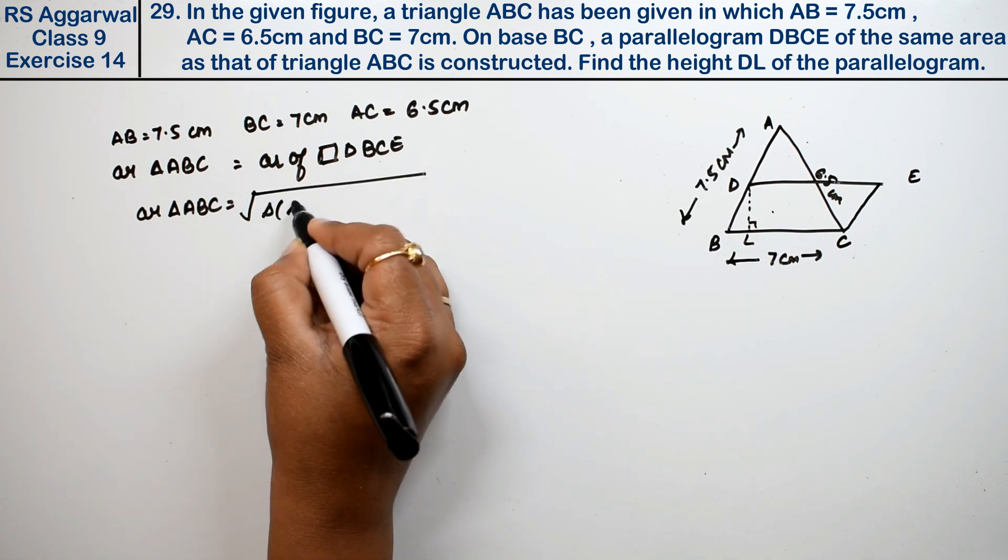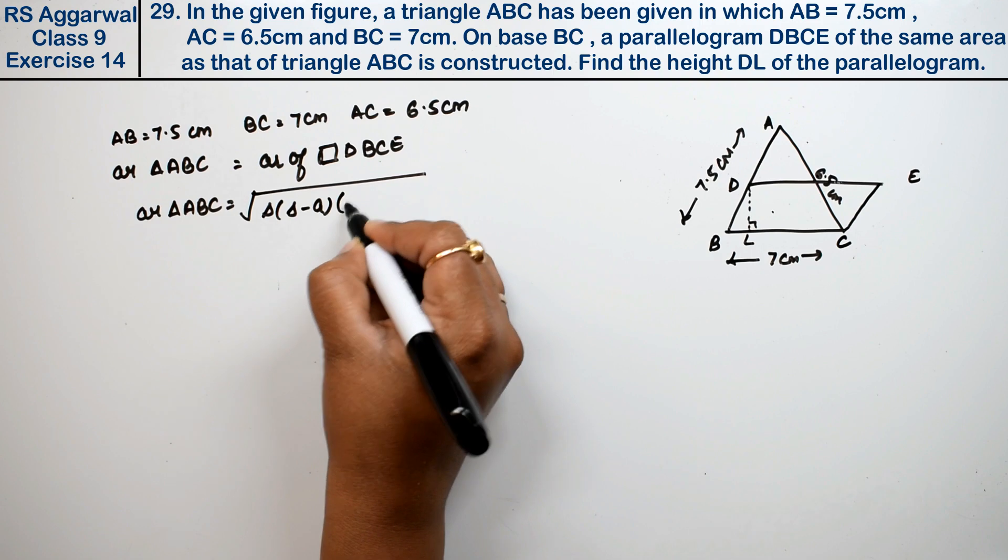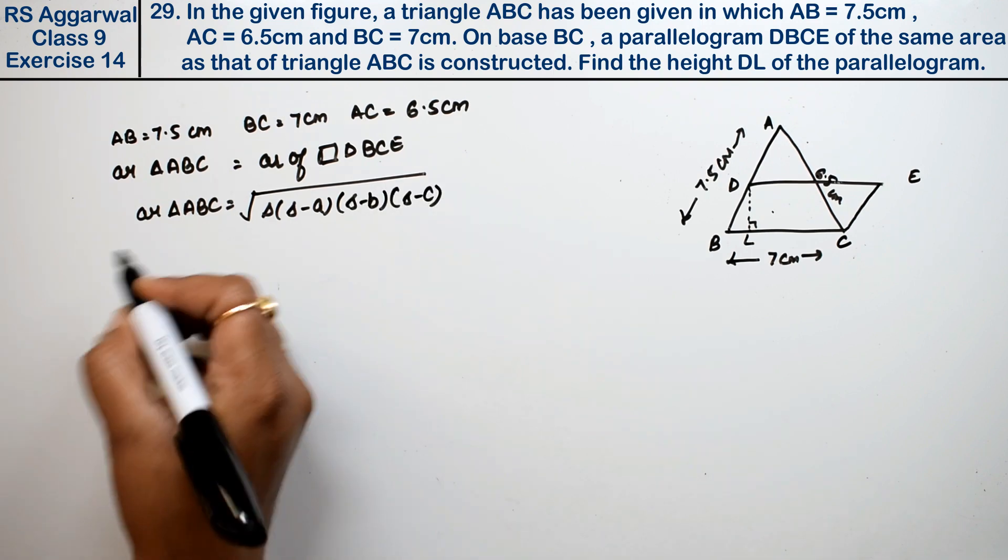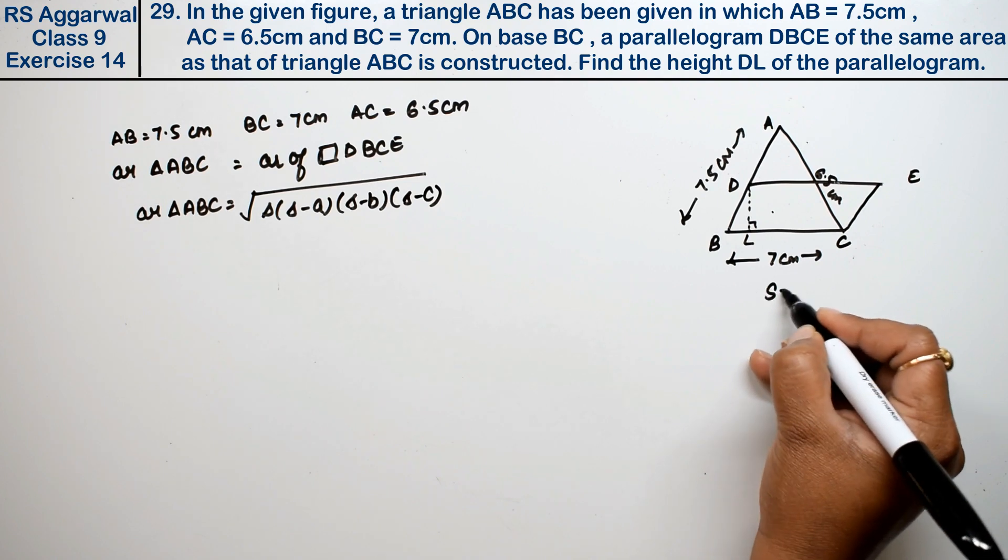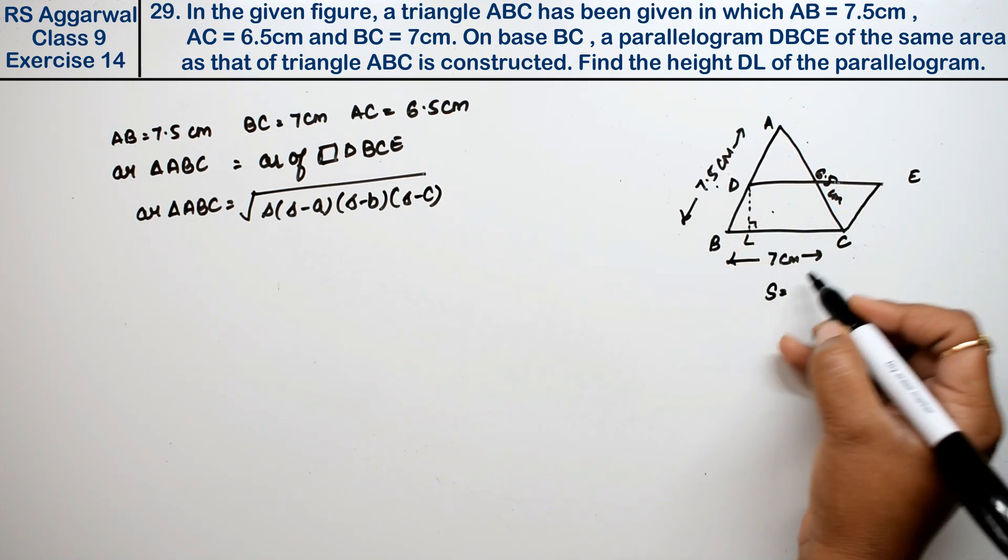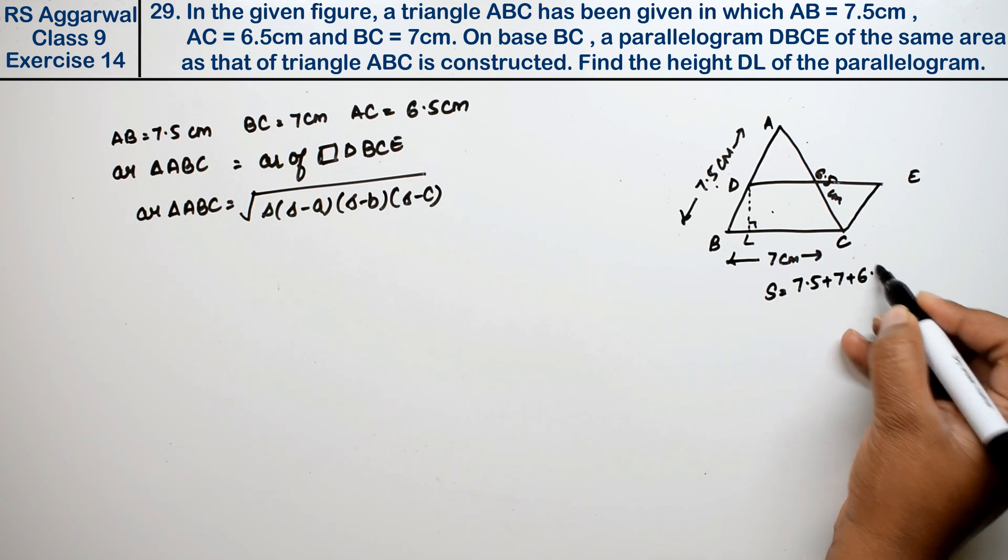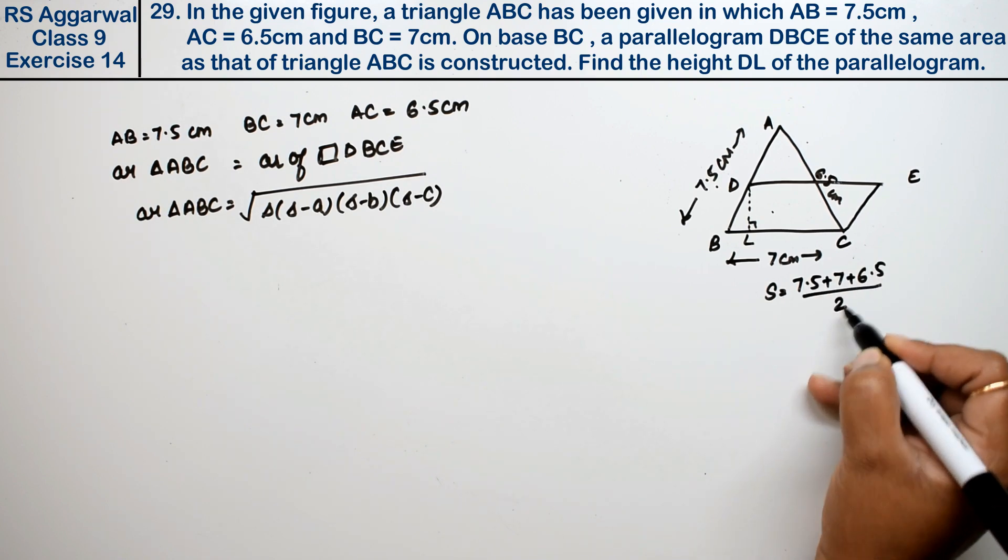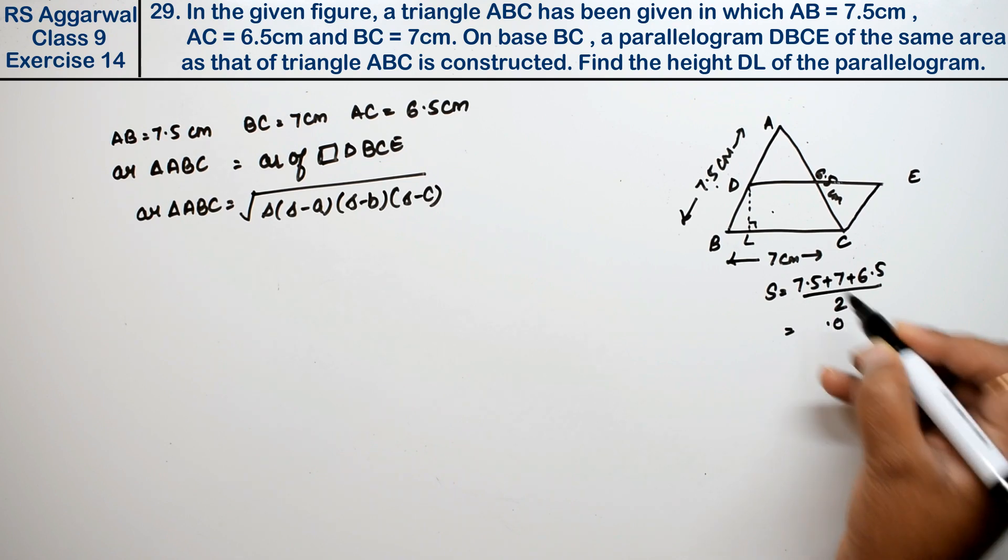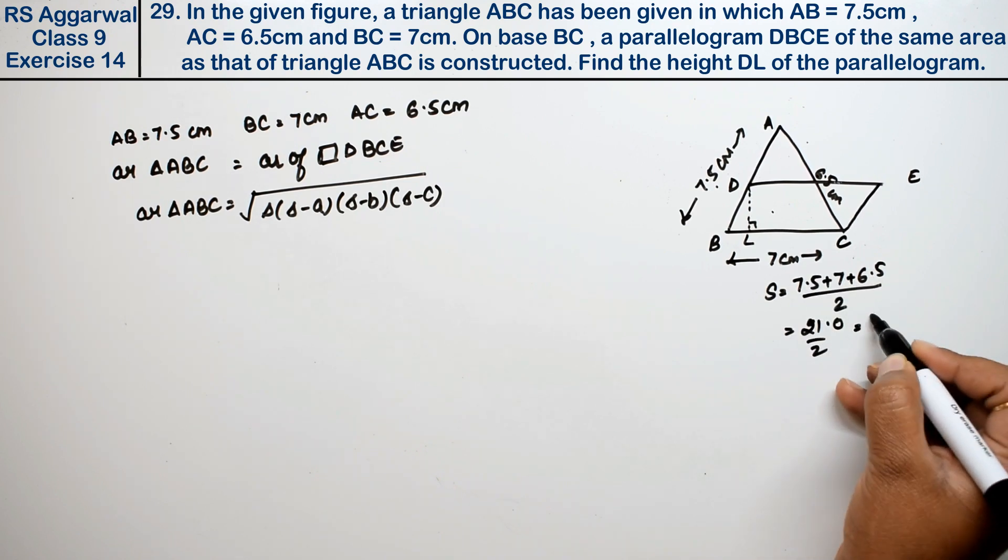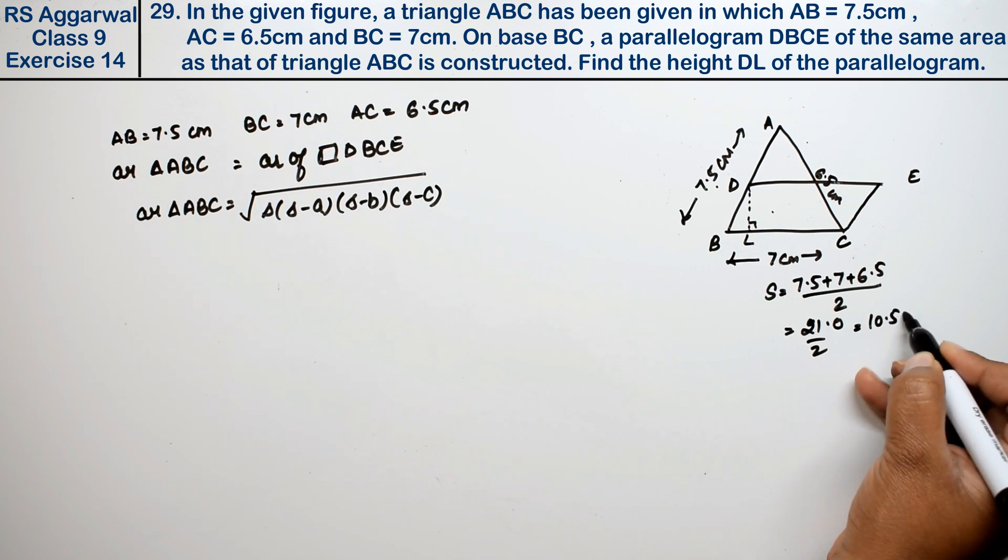The formula is square root of S times S minus A times S minus B times S minus C. Now S is the semi-perimeter: A plus B plus C divided by 2, which is 7.5 plus 7 plus 6.5 divided by 2, equals 21 upon 2, which is 10.5.